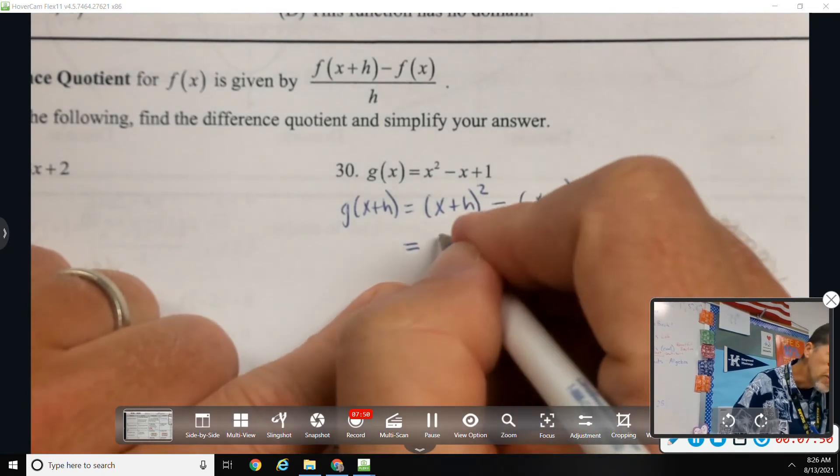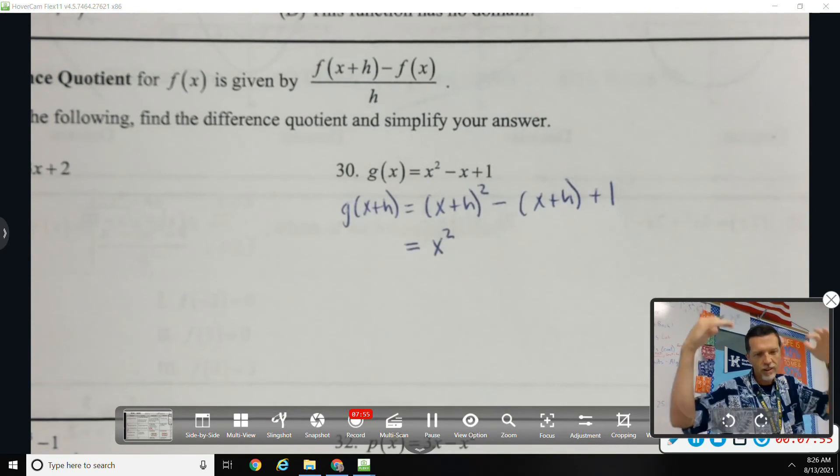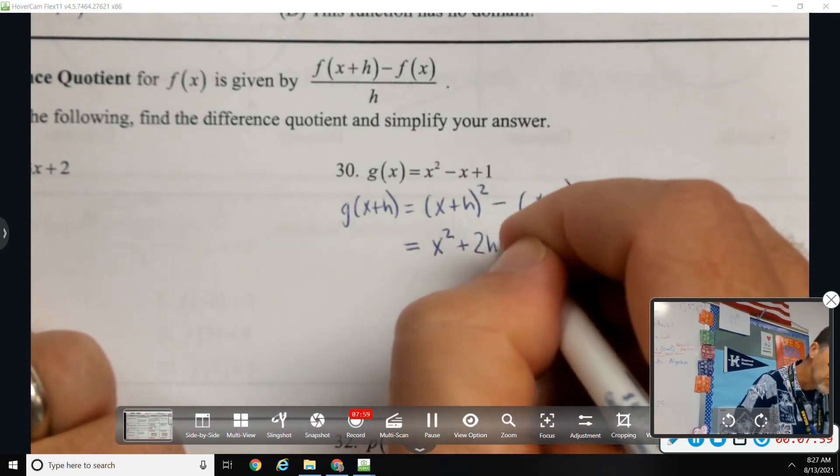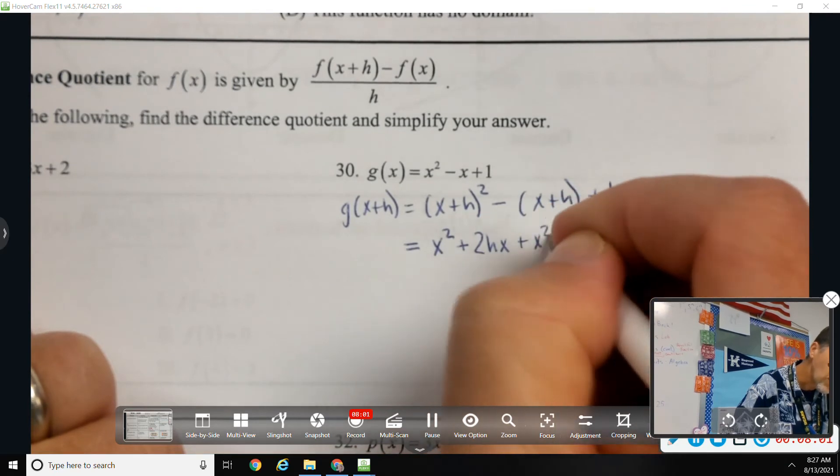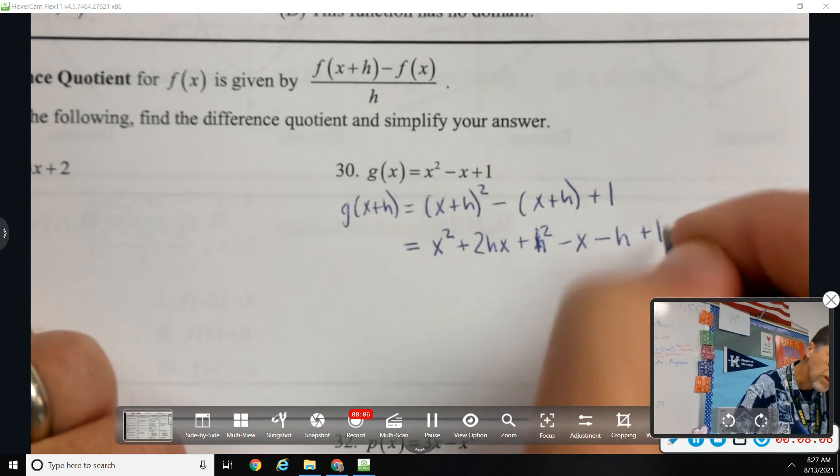Hopefully you've foiled this enough times where you don't have to write it out and foil it and collect like terms and waste three lines of space to get to x squared plus 2hx plus h squared minus x minus h plus one.